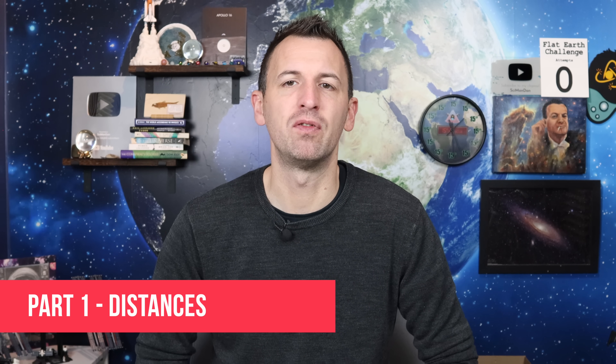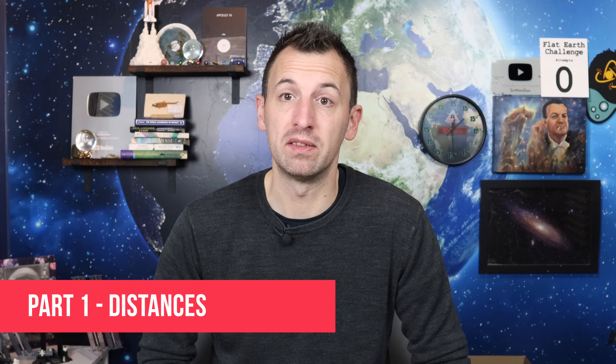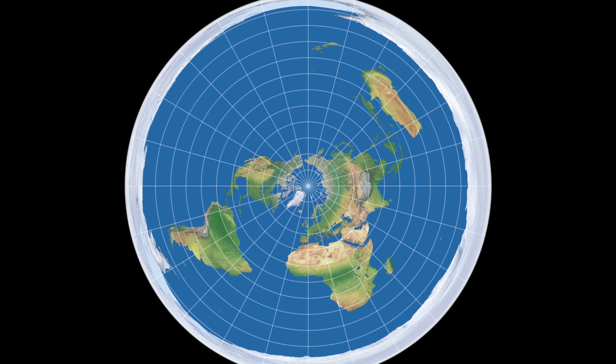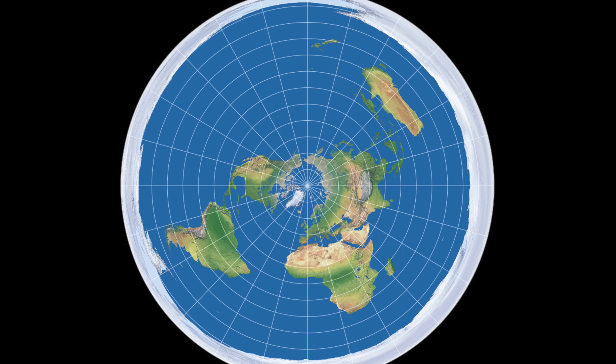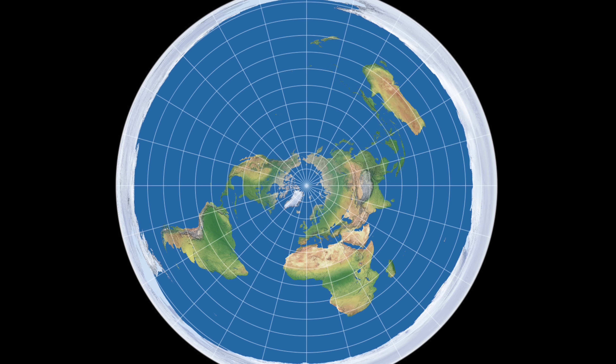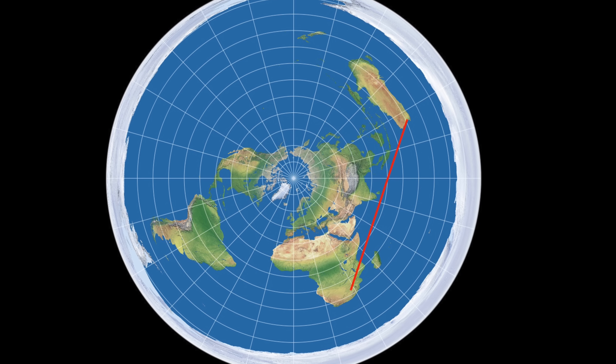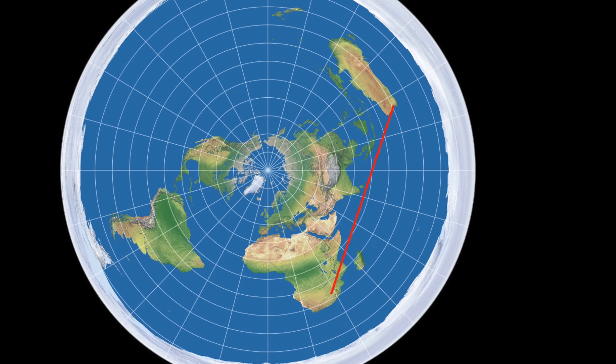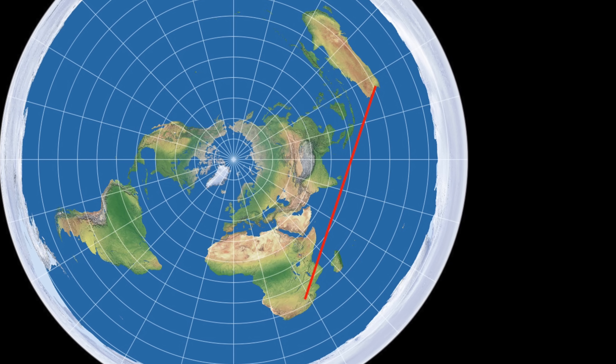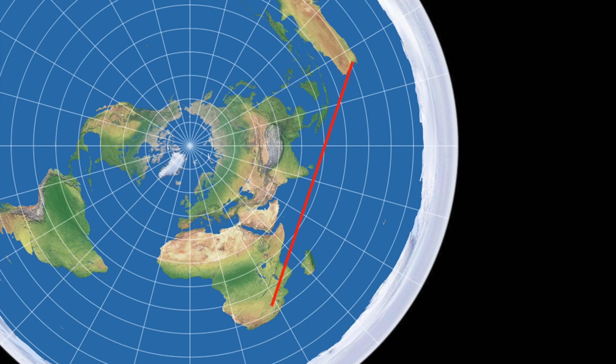The map falls apart before we even start — distances. On a Flat Earth map, everything is stretched outward from the North Pole. And when I say stretched, I mean stretched, like someone grabbed South America with a pair of tongs and said, let's see how far this goes. Example one: Johannesburg to Perth. In the real world it's 8,300 kilometres, but on the flat map it looks more like 15,000 kilometres.